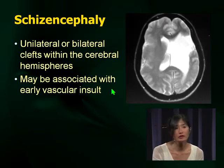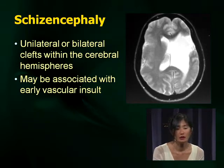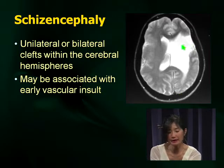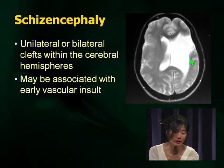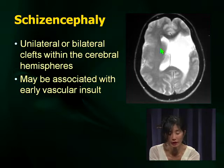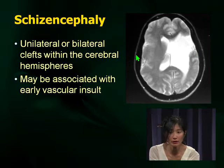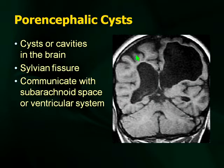Schizencephaly is another condition seen relatively commonly in neurology. Looking at this image, you see a cleft in the brain — and if you look around the edges you see gray matter lining the cleft, making it a developmental abnormality in the cerebral hemisphere. You can have unilateral or bilateral clefts. It may be associated with an early vascular insult because it frequently follows a pattern tracing the territory of the middle cerebral artery.